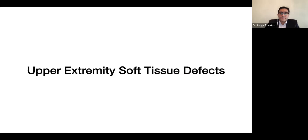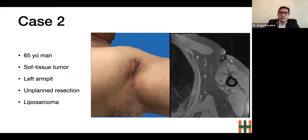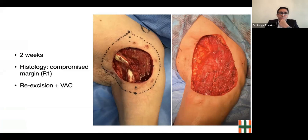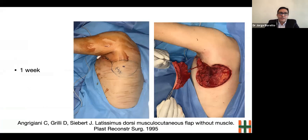I will present some cases to show the strategy and algorithm of reconstruction in our department. The first cases are about soft tissue defects. This is a 65-year-old man with a soft tissue tumor on his left armpit who underwent an unplanned resection elsewhere. Histology revealed a liposarcoma and he was referred to our hospital. After review by the multidisciplinary team, a wide resection was planned and, according to our protocol, VAC therapy was applied until the histology result. At two weeks postoperative, a re-excision was planned because of a compromised margin. Again, VAC therapy was applied. At one week, we performed the final reconstruction of the soft tissue defect with a CHEDAP flap.